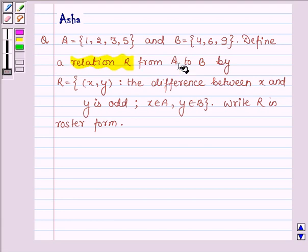Define a relation R from A to B by R equals the set of all ordered pairs (x, y) such that the difference between x and y is odd, and x and y are elements of A and B respectively. Write R in roster form.